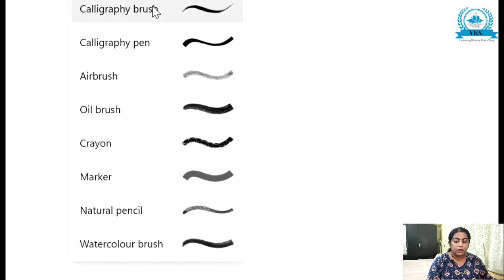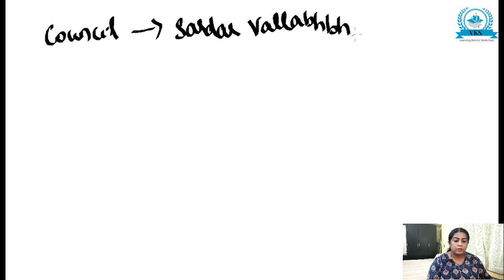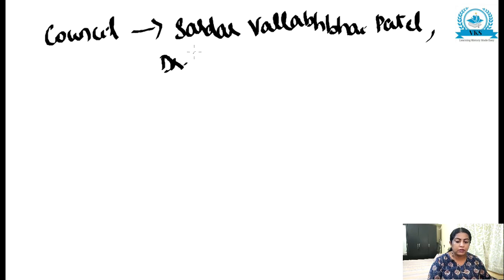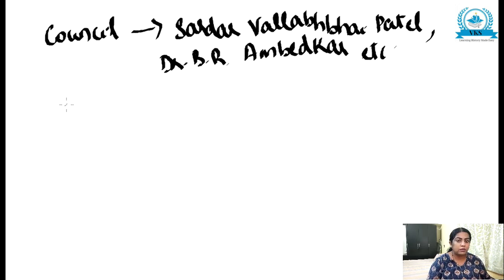Other prominent members of the Council were Sardar Vallabhai Patel, Dr. B.R. Ambedkar, Maulana Abul Kalam Azad, and others. All these people were the other members of the Council. So the interim government's executive council was established with these prominent leaders.